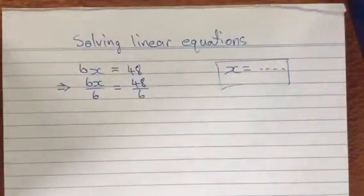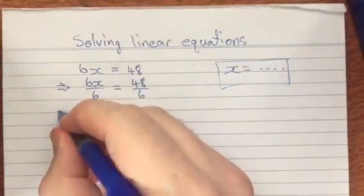Doing things to both sides, the exact same thing to both sides, actually doesn't change the equation, it just changes the way it looks. And that's exactly what we want.